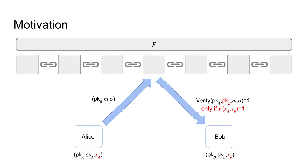In this setting, we also require unforgeability, which means that no one other than Alice should be able to create a valid signature in her name and, additionally, that Alice and Bob should not be able to create a valid signature if they do not fulfill the global policy. Furthermore, we require attribute hiding, which means that nothing about the attributes of the different parties is leaked by the public keys and the generated signatures only reveal that the attributes of the participating parties fulfill the policy and nothing beyond that.